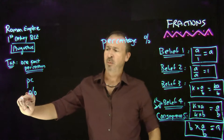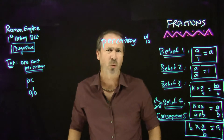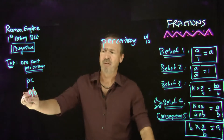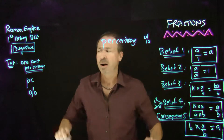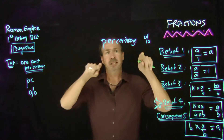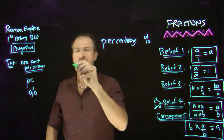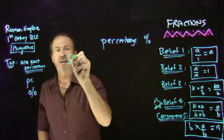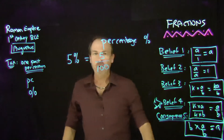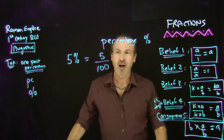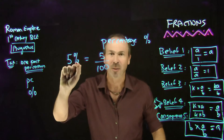I think the first text that we know of that actually used this symbol extensively was about 1425, an Italian text. So this has been around for a good 600 years now. So what does that mean? This means per 100 — literally percentage per 100. So if I say 5%, I mean 5 per 100. I literally mean the fraction with denominator 100.